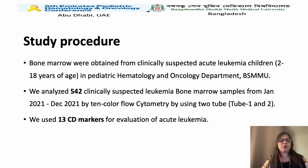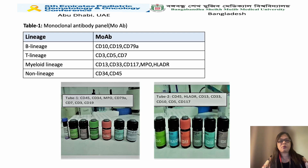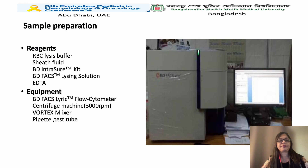Bone marrow samples were obtained from clinically suspected acute leukemia children. We analyzed 542 samples using 13 CD markers for evaluation. The monoclonal antibodies used were lineage-specific: for B-lineage leukemia, CD10, CD19, and CD79a; for T-lineage leukemia, CD3, CD5, and CD7; for myeloid lineage, CD13, CD33, CD117, MPO, and HLA-DR; and additionally CD34 and CD45.